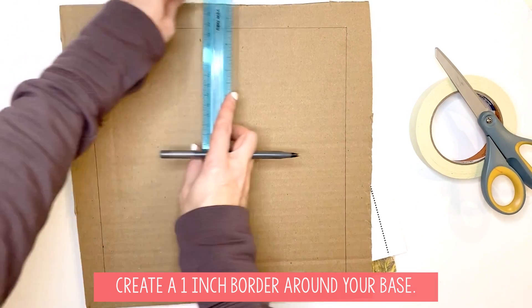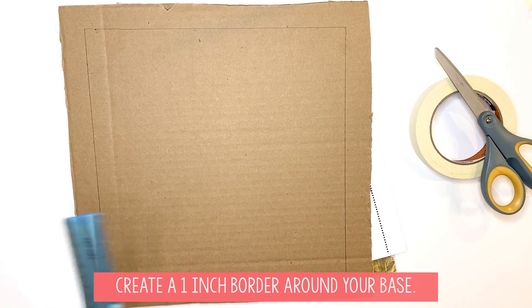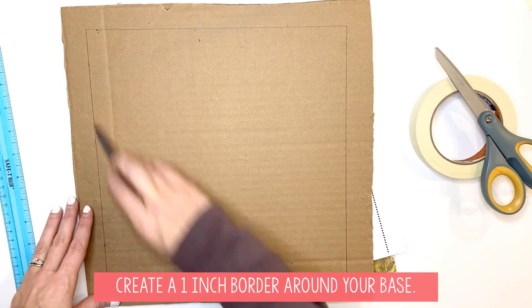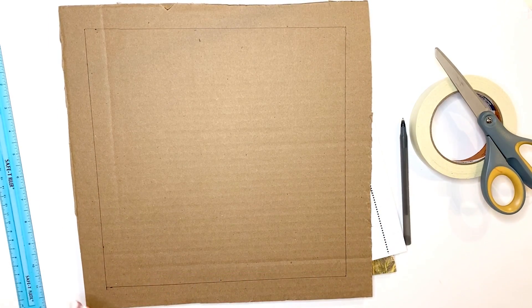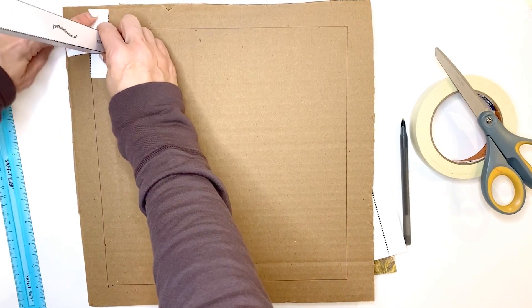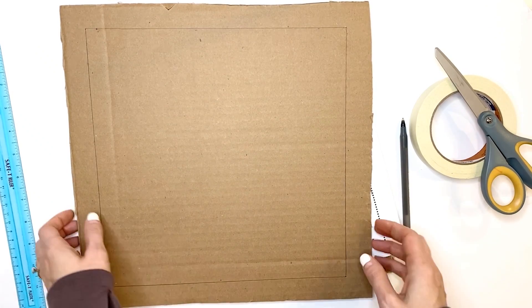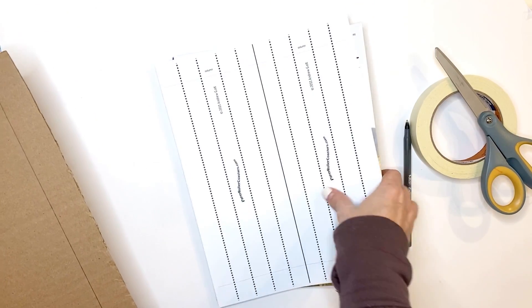You're going to need that border because when you put your column here, you need a border to tape the pieces of the column down with. Okay, once you have your base set, let's start making your columns. That is the very first step.